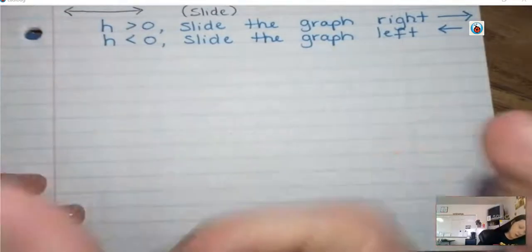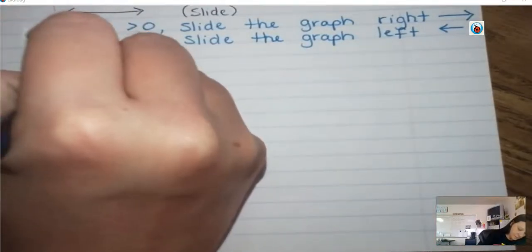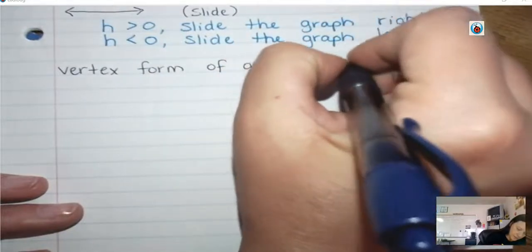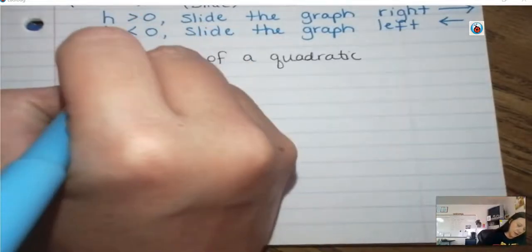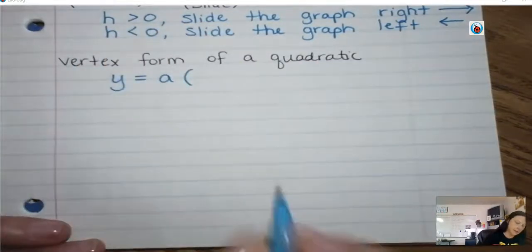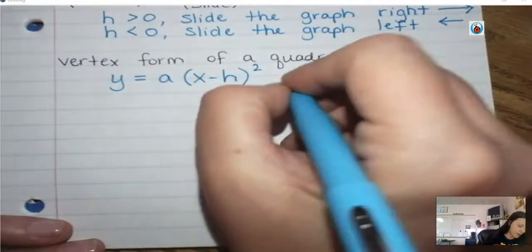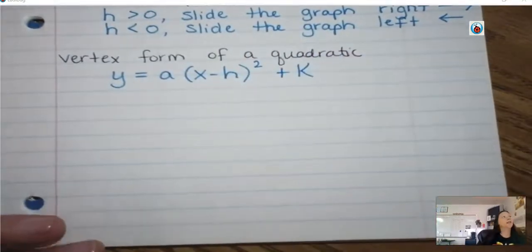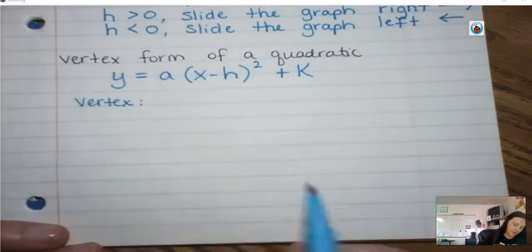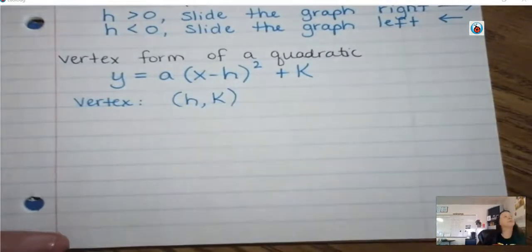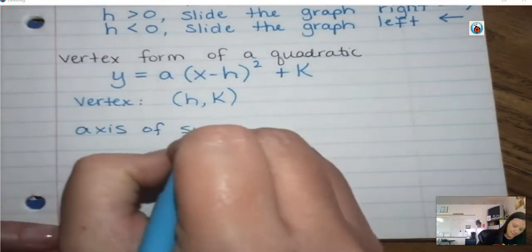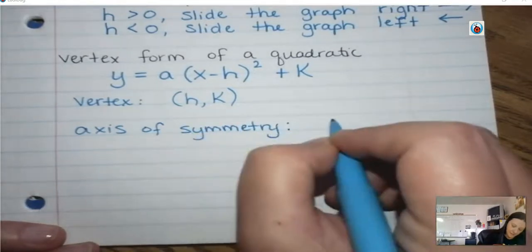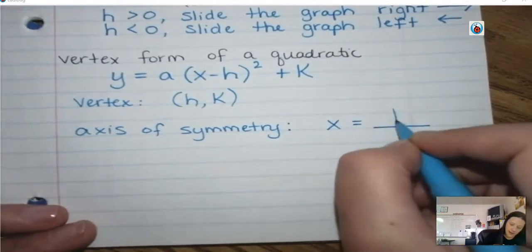Next I have the vertex form of a quadratic. When something's written in this form, it's easy to find the vertex. Vertex form is y equals A times x minus H squared plus K. When it's written like that, the vertex is the point H comma K. We can also find the axis of symmetry — it's always going to be x equals, and then it's whatever the H value is.